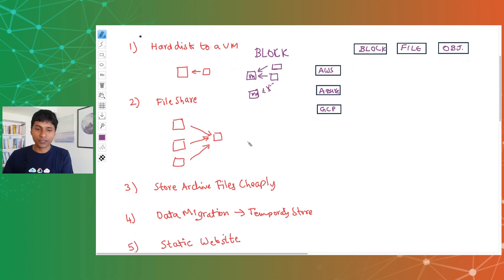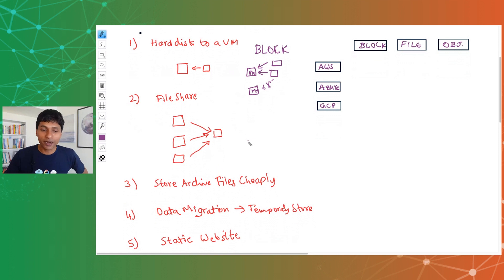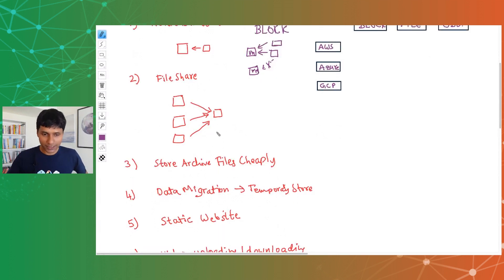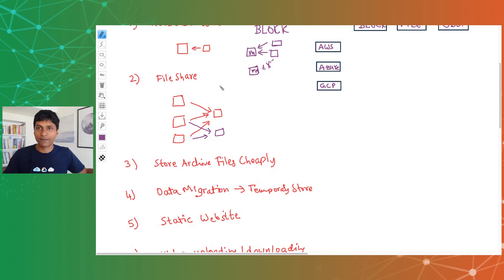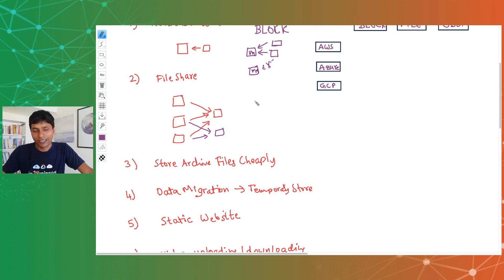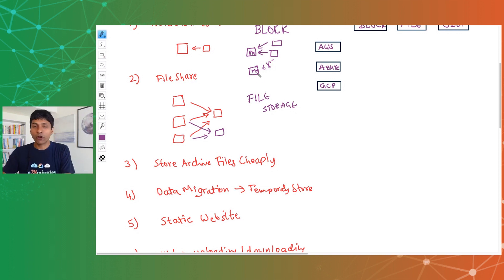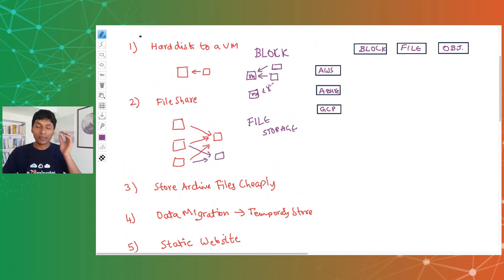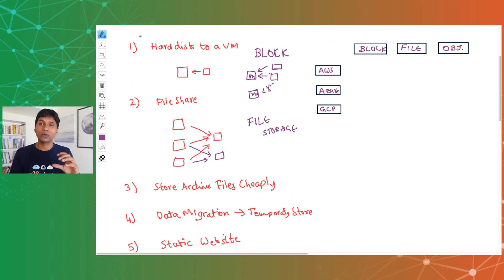The other type of storage is file storage, for when you want to create a file share and attach it with multiple VMs. Each of these VMs might also connect to multiple file shares as well — it's a many-to-many relationship. So block storage is typically only attached with one VM at a particular point in time, whereas file storage is shared between multiple VMs.